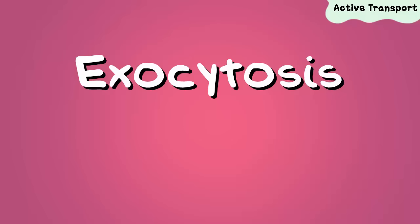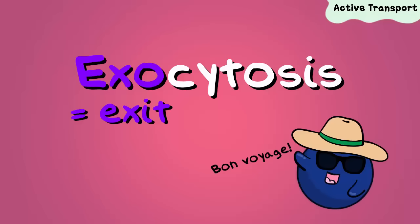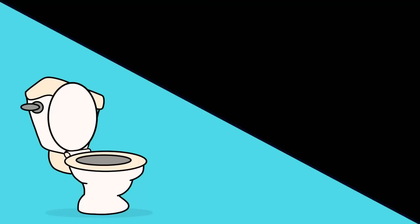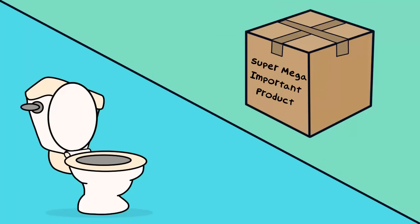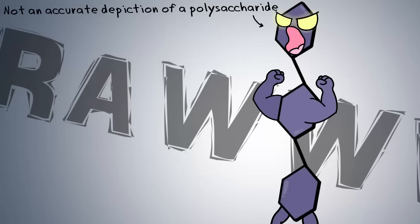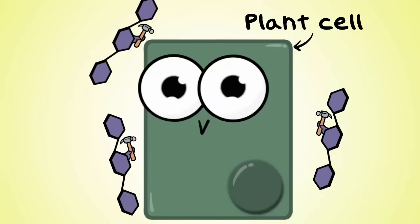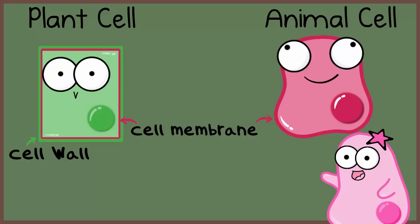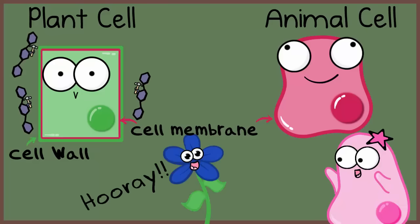Exocytosis is the reverse direction of endocytosis—think 'exo' and 'exit,' they sound very similar. Exocytosis can be used to get rid of cell waste, but it's also really important for getting valuable materials out that the cell has made. For example, large carbohydrates are really important for making plant cell walls. Cell walls are different from cell membranes—all cells have membranes, but not all cells have a wall, though plant cells do. To make a cell wall, those carbohydrates produced inside the plant cell need to get out via exocytosis.